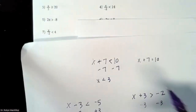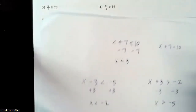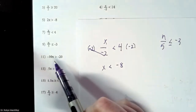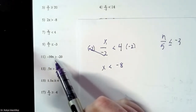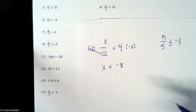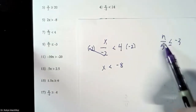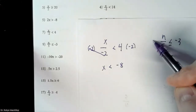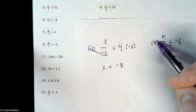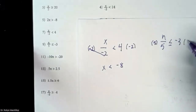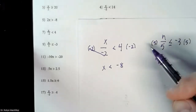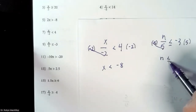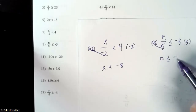Now let's do N over 5 is less than or equal to negative 3. It's a division problem, so we need to get rid of that extra 5 by multiplying it out. Multiply both sides by 5 — the fives cancel, leaving you with N. Bring down the sign, and negative 3 times 5 is negative 15. So N is less than or equal to negative 15. Division problems in algebra are not that bad. I actually think multiplication and division is easier than adding and subtracting.